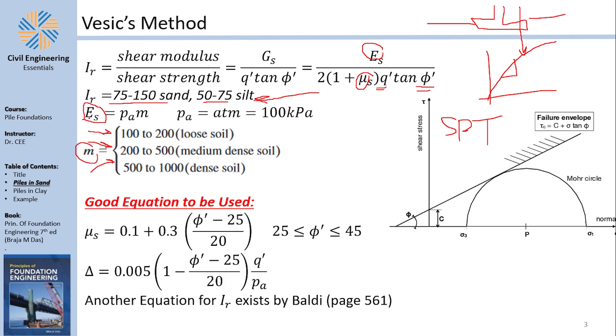There are some other equations that are needed, because for the reduced index, you need Δ, the volumetric strain, and you also need μs. μs is basically given by Roger Mdas.